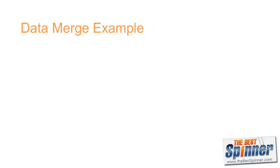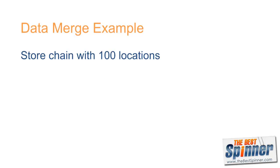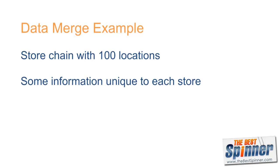Let's say you're promoting a chain of stores with locations in 100 cities. The basic article you'd write is going to be the same for each store, but certain information such as the city name and the store's specific address and phone number would obviously vary. That's when using the Best Spinner's Data Merge feature would be extremely helpful.